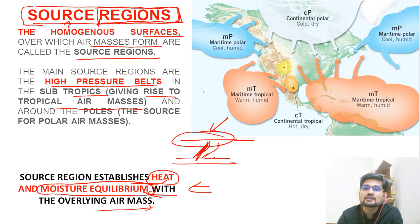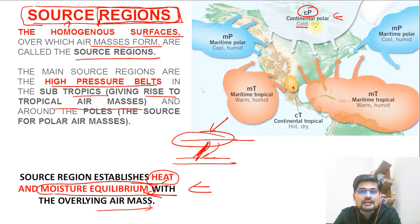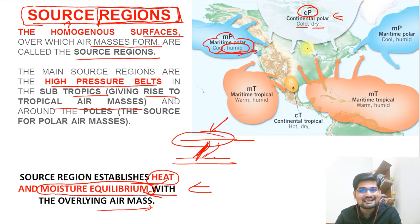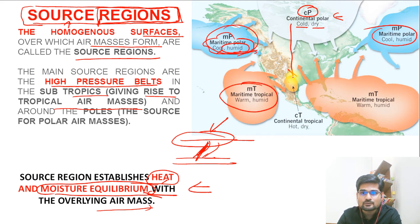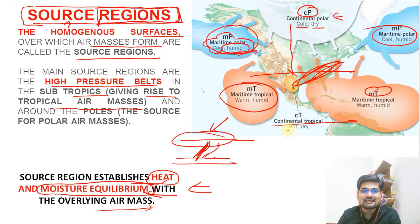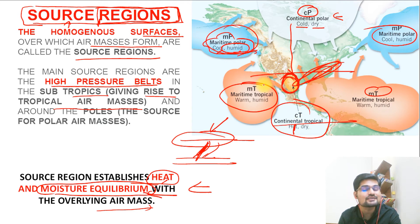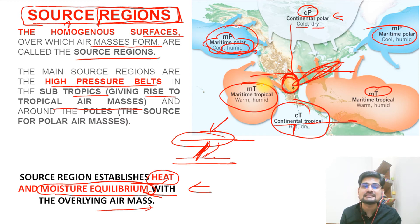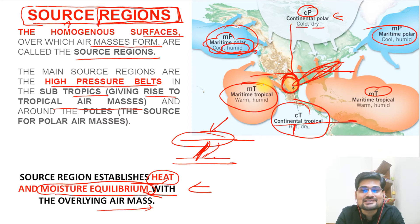Looking at the map, CP is the continental polar air mass — cold and dry in nature. Then you have maritime polar, which shows the influence of oceans — cool as well as humid. Maritime tropical air mass is found southwards into the tropics near coastal areas. And in the interior of the continent, you find the continental air mass. This is how source regions have their own characteristics, influencing winds in terms of temperature and moisture.